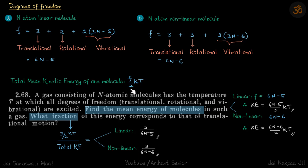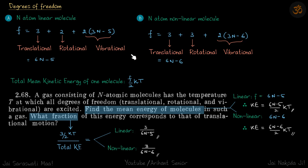One (kT/2) is the kinetic energy corresponding to one degree of freedom, so for f degrees of freedom, total kinetic energy is f * kT/2. For a linear molecule, translational kinetic energy is (3/2)kT, rotational is (2/2)kT, and overall kinetic energy is (6n - 5) * kT/2.